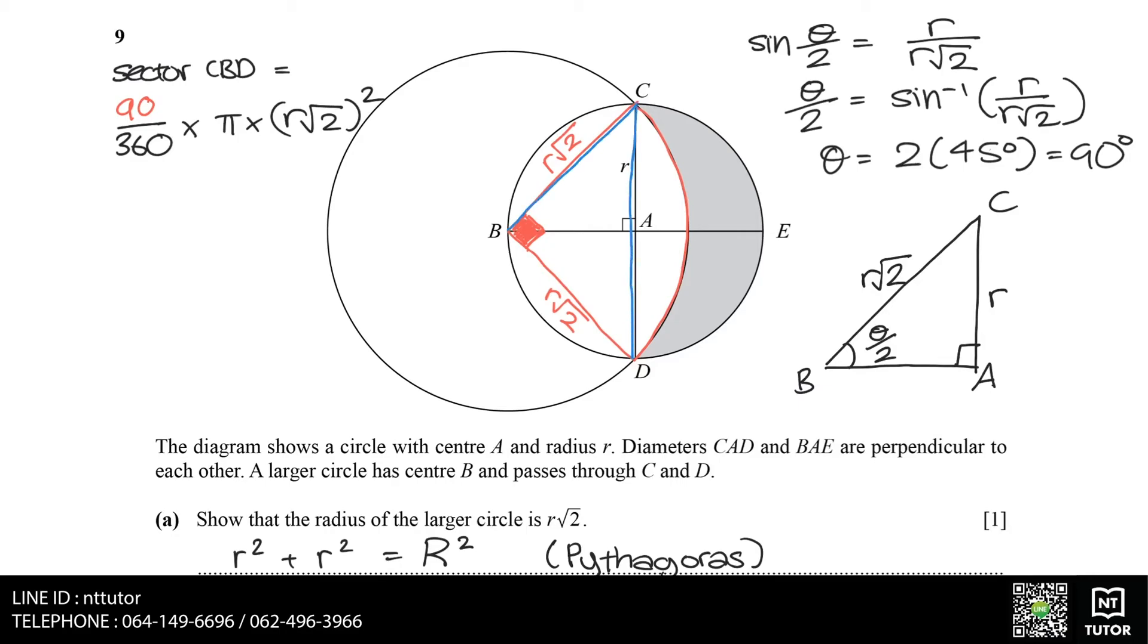We still need to find out the area of triangle CBD. The area of a triangle can be found from base times height divided by 2 or half AB sine C. In this case, I would do half AB sine C, where A equals R square root 2, B also equals R square root 2, and angle C equals 90. Since angle C equals 90, BC is the height and BD is the base, so we could have done base times height divided by 2 as well.